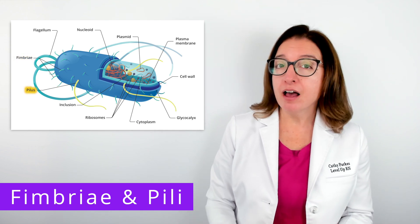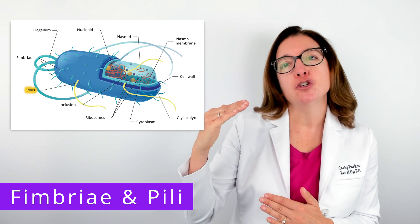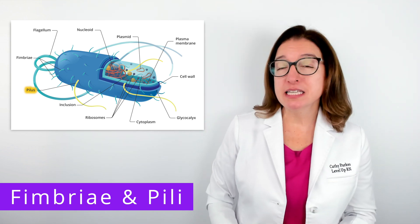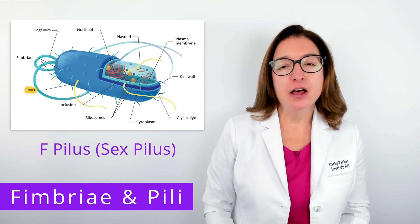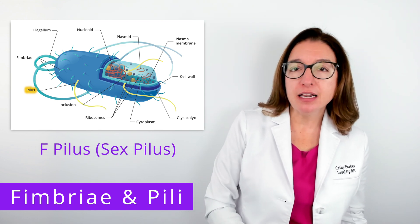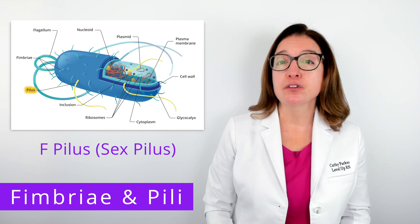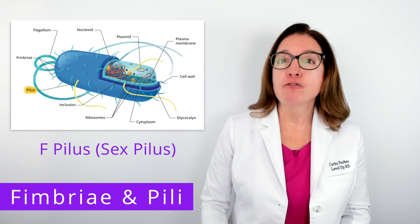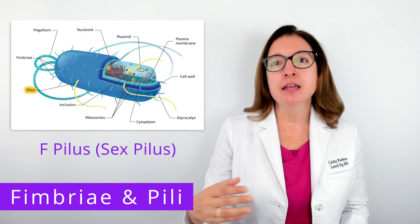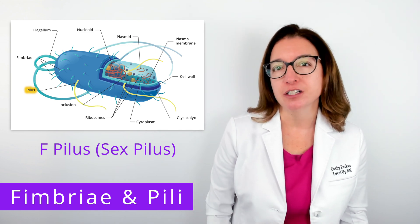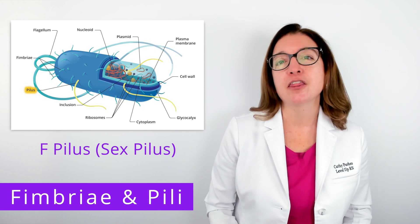Pili are similar to fimbriae, but they are longer and less numerous. One specific type of pilus to be familiar with is an F pilus, which is also called a sex pilus or conjugation pilus. The F pilus allows for the transfer of DNA from one bacterial cell to another in a process called conjugation, and we will be talking about conjugation in detail in another video.